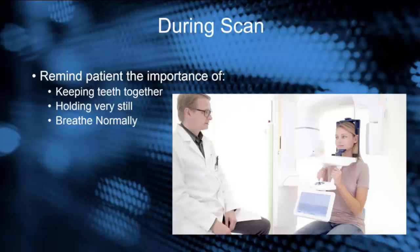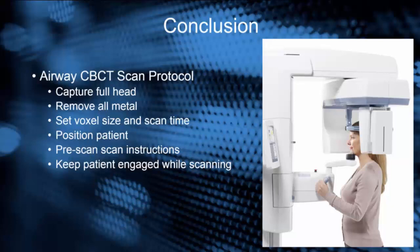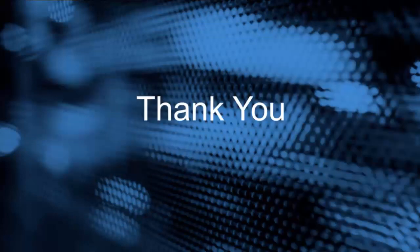So for cone beam airway studies, the airway scan protocol captures the full head, removes all metal, and sets the voxel size and scan time appropriately. Position the patient in natural head position. Give the patient pre-scan instructions about keeping their teeth closed and holding still. During the scan, keep the patient engaged by letting them know to breathe normally and continue to hold steady. That's all there is to it. Thank you so much for listening. My name is Craig Dial.